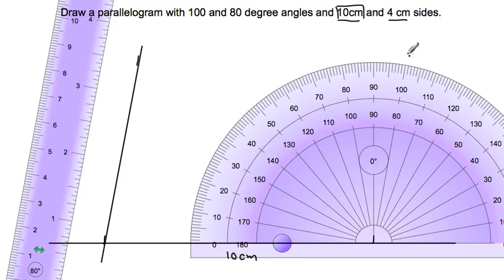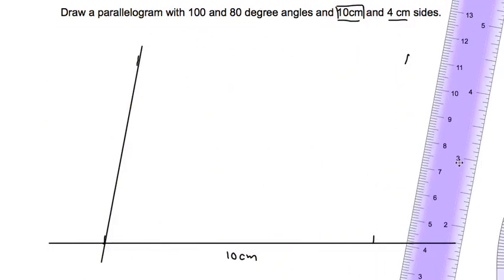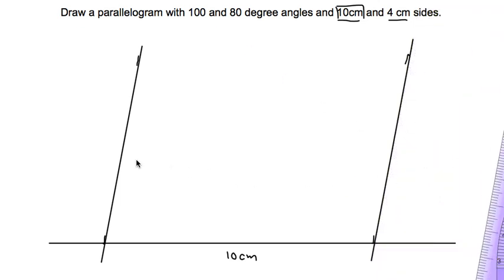Going out to the edge there and drawing another 80 degree line mark. Connecting those two points. Now I have my sides drawn. Bottom is 10 centimeters. The sides are drawn.